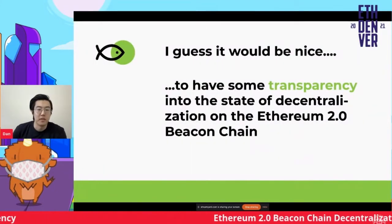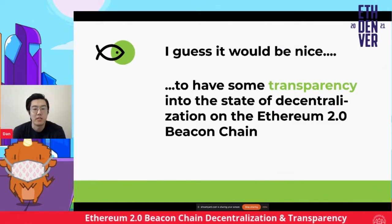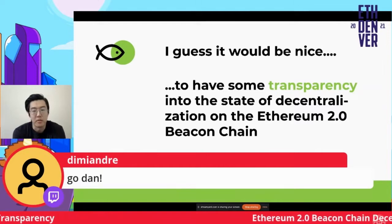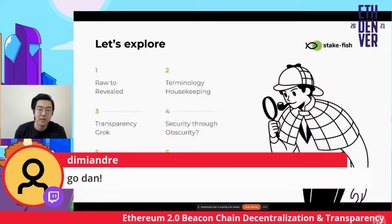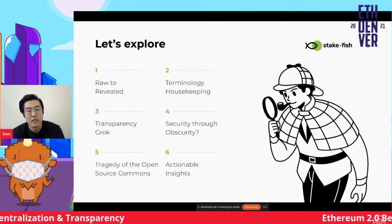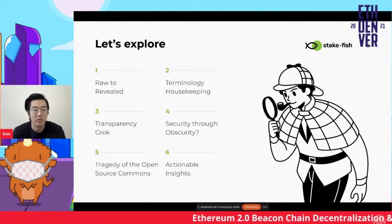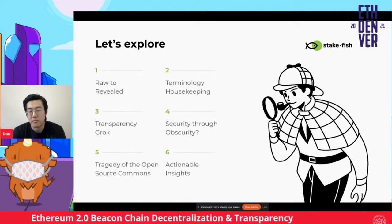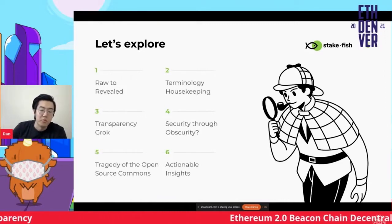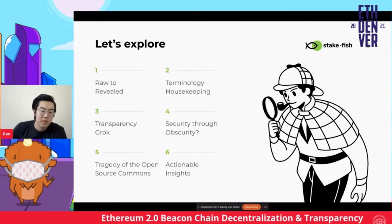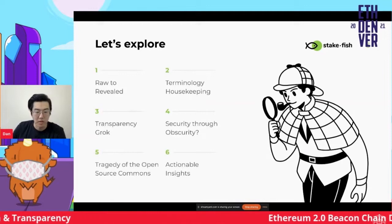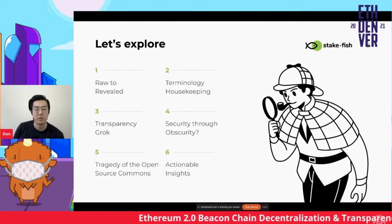Relative to other networks, it would be nice to have some transparency and insight into the state of what our decentralization is on the Ethereum 2 Beacon Chain. Steakfish is a proof of stake validator and we've been supporting Ethereum 2 deposits. I'll be talking about how we can get from raw data to revealed data, going over some terminology, talking about transparency, security through obscurity, the tragedy of the open source commons, the bystander effect, and ending with some actionable insights.